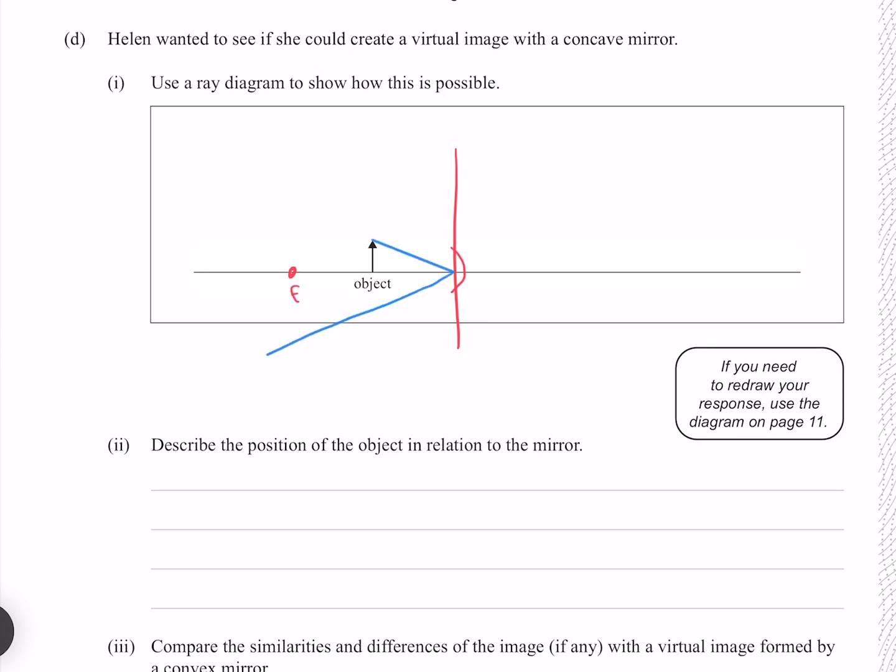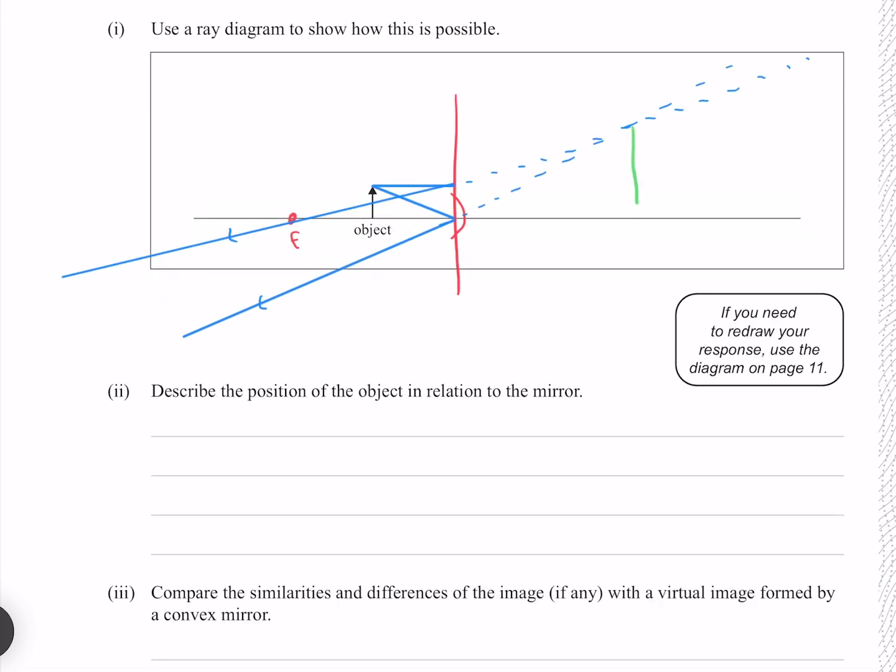Our first ray reflects symmetrically about the middle. Our second ray goes parallel and then through the focal. As we can see these two rays are diverging, meaning we need to backtrace them to find a virtual image, which is roughly here.